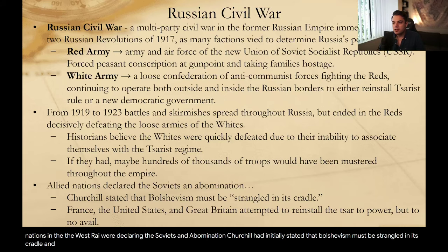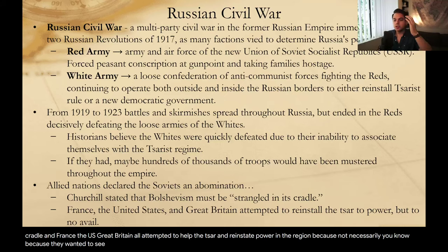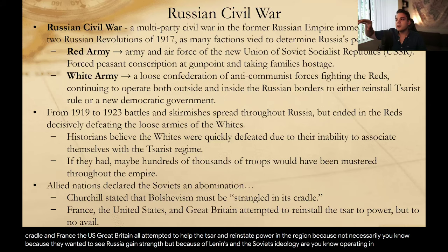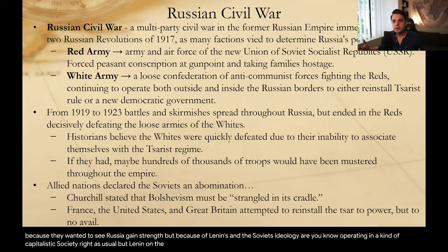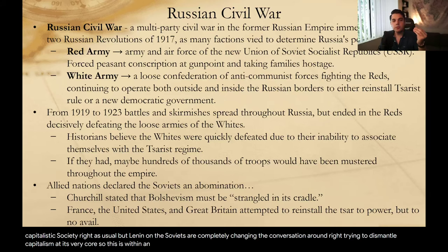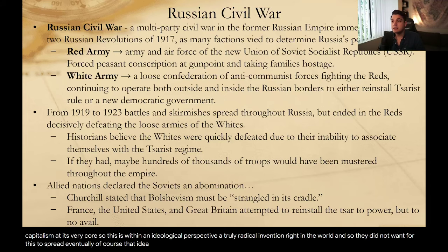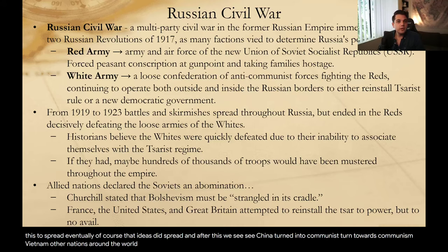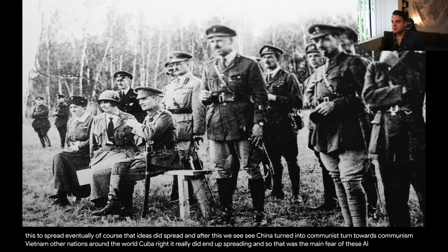Allied nations in the West were declaring the Soviets an abomination. Churchill had initially stated that Bolshevism must be strangled in its cradle. France, the US, and Great Britain all attempted to help the Tsar and reinstate power in the region — not necessarily because they wanted to see Russia gain strength, but because of Lenin's and the Soviets' ideology. All of these governments are operating in a capitalistic society, but Lenin and the Soviets are completely changing the conversation, trying to dismantle capitalism at its very core. This was, within an ideological perspective, a truly radical invention in the world. They did not want this to spread. Eventually, of course, the ideas did spread — China turned towards communism, Vietnam, Cuba, and other nations around the world. That was the main fear of these allies moving forward.